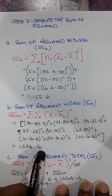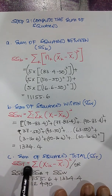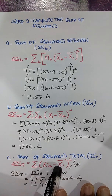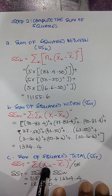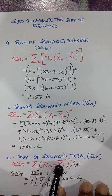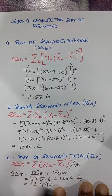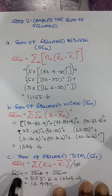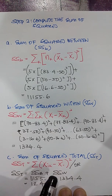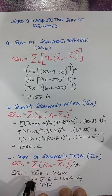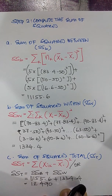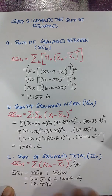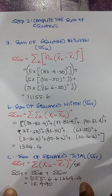Adding all of those up, I get a sum of squares within of 1334.4. The sum of squares total is computed by subtracting the grand mean from every individual score across every group. Alternatively, you can simply add sum of squares between and sum of squares within: 1155.6 plus 1334.4 gives a total sum of squares of 12490. That completes step 2.